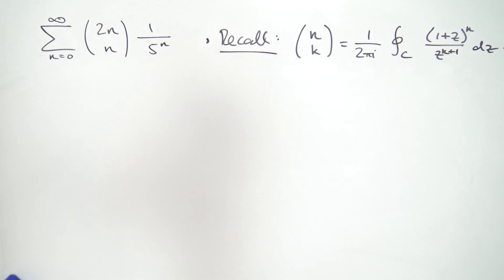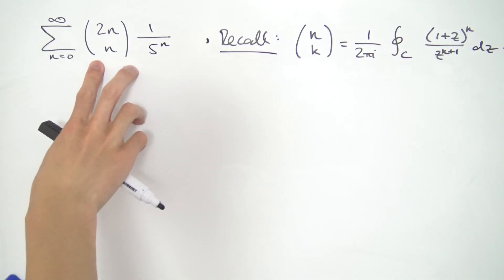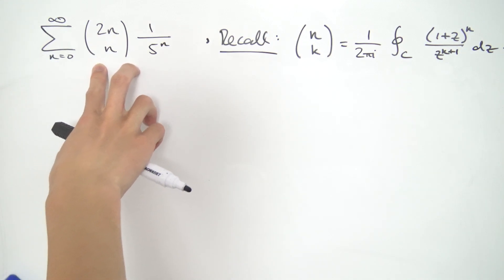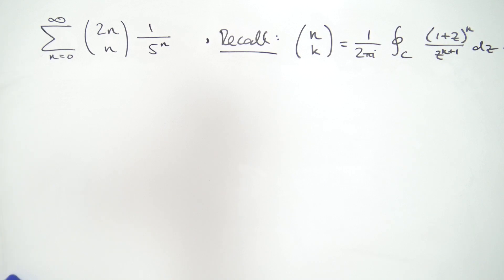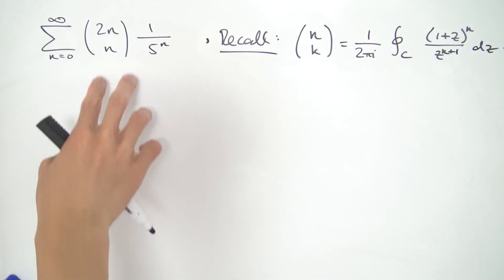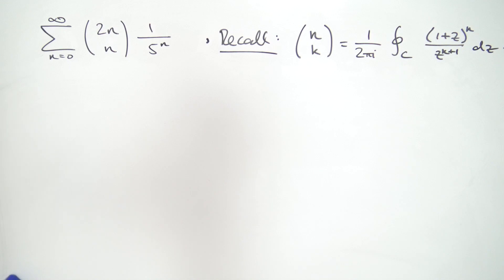If you want to be using real methods for this, you'll probably have to expand this out but then you'll have the factorials flying around everywhere, or you'll probably have to come up with some clever identities. But why restrict ourselves to the real line when we can go complex with this? And that's exactly what we're going to be doing.